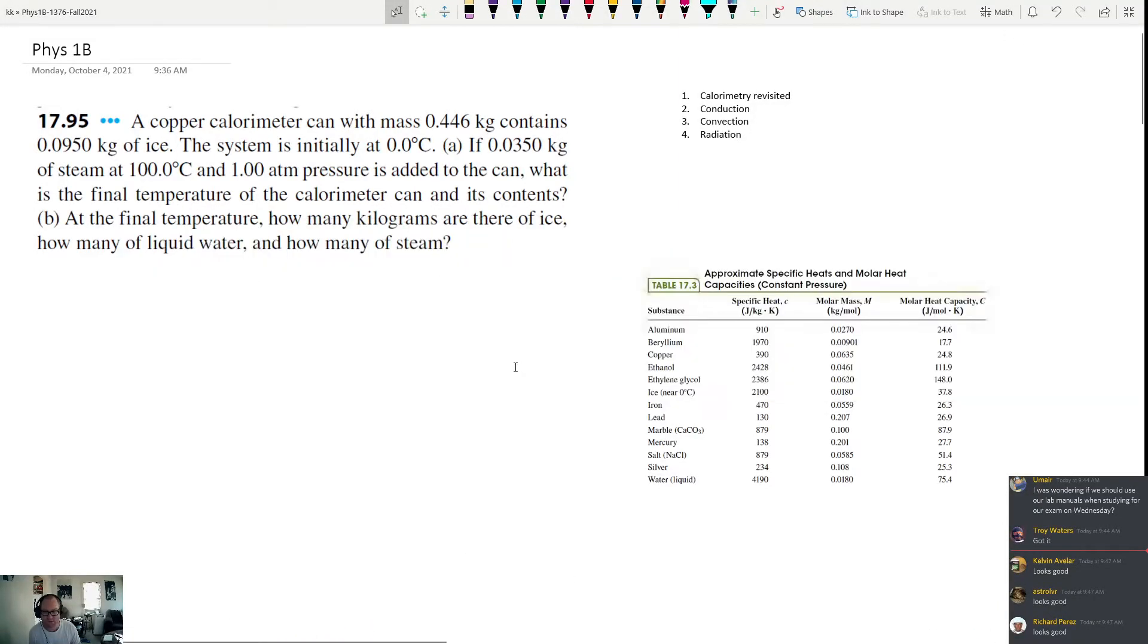All right, so this is the first hour of Physics 1B for Monday, October 4th. Today we're going to be doing one quick calorimetry problem just to refresh your minds about it, since it's been five days since we met and you've had time to go home and do homework problems. Then we're going to talk about methods of heat transfer.